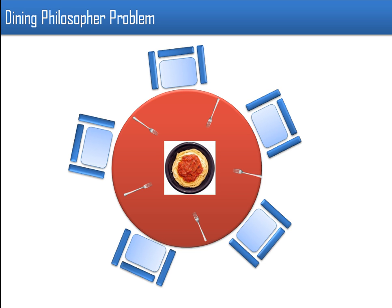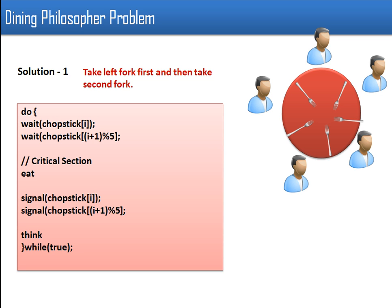In this video I will explain the dining philosopher problem, which is a classical synchronization problem. In this problem there are five philosophers who are spending their life thinking and eating. There is a plate of noodles and there are only five forks. Every philosopher who wants to eat needs two forks — a pair of forks — and once he occupies two forks he can start eating.